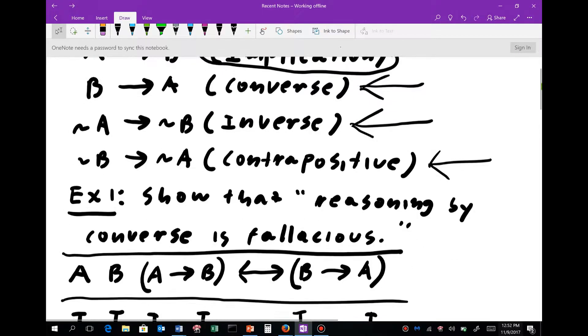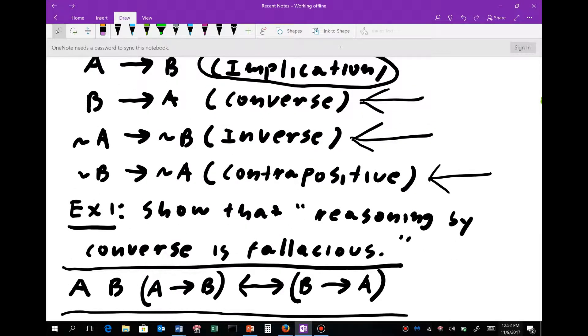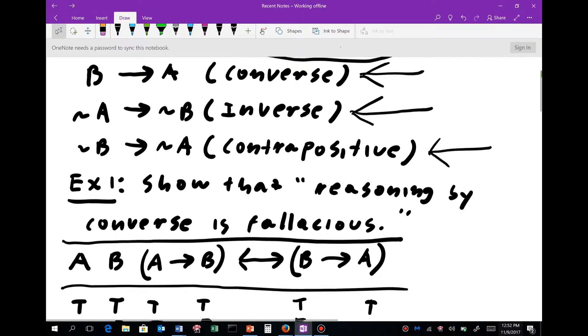We'd make a truth table, and we'd look to see if the implication A implies B is logically equivalent to the converse. Now, since I said show that reasoning by converse is fallacious, we are going to see a false in this truth table, and that would be called a counterexample.